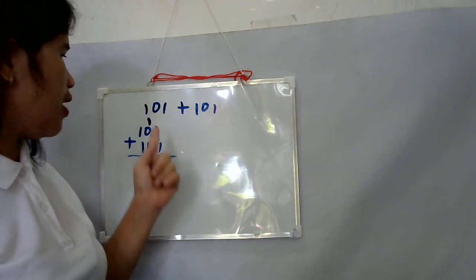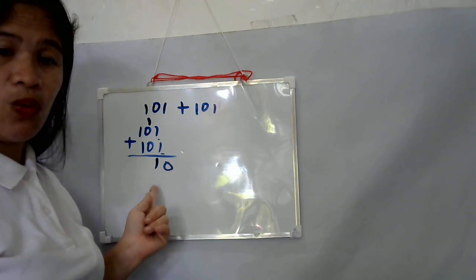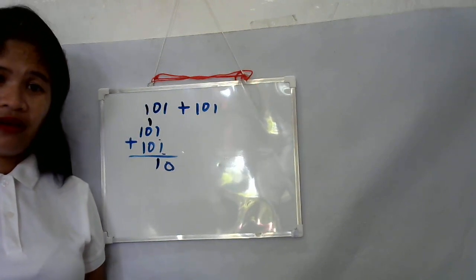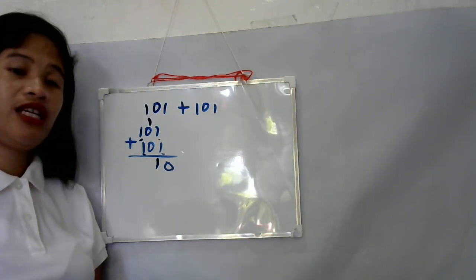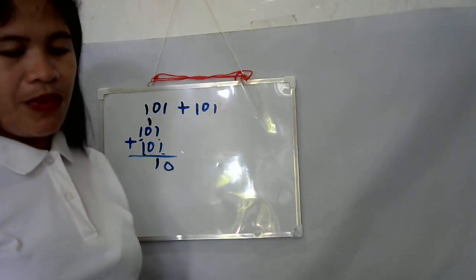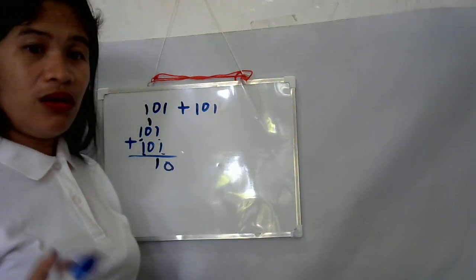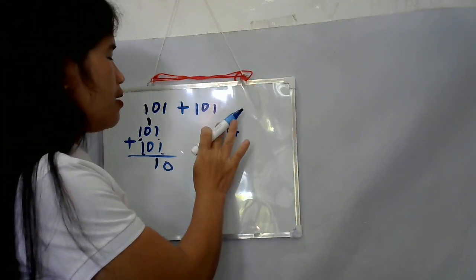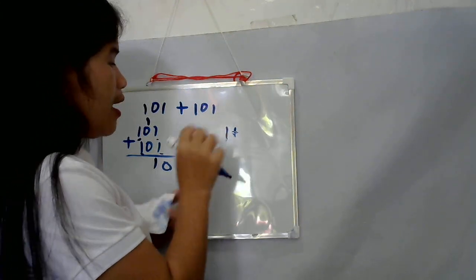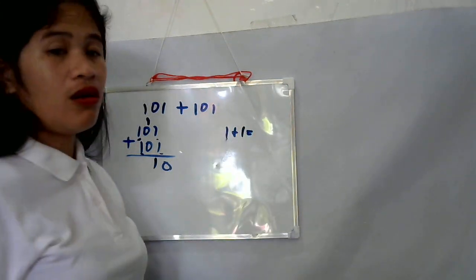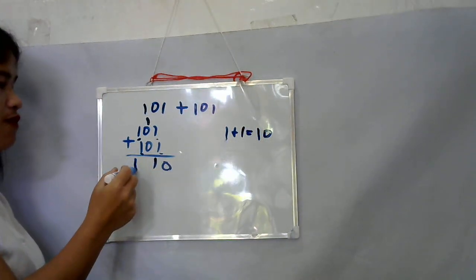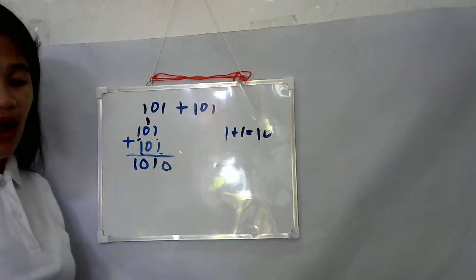Now add the hundreds place. This belongs to this group, digit 101 plus one. We will add that. One plus one plus one, the answer is always ten. So that is now the result: 1010.